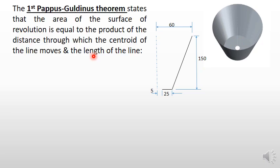What is the first theorem of Pappus-Guldinus? It states that the area of the surface of revolution is equal to the product of the distance through which the centroid of the line moves and the length of the line. First, you require the centroid location, and then you have to revolve that centroid around the y-axis for the entire 360 degrees.